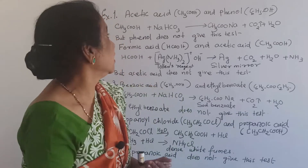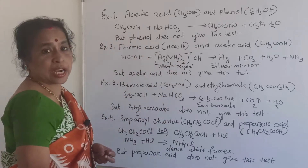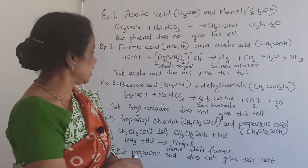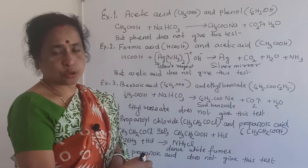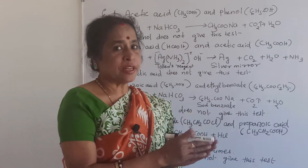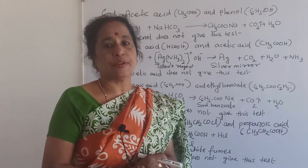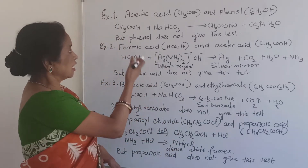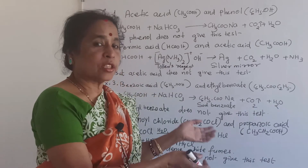Summary of examples: Acetic acid vs. phenol — use sodium hydrogen carbonate test. Formic acid vs. acetic acid — use Tollens' test. Benzoic acid vs. ethyl benzoate — benzoic acid reacts with NaHCO3. Propanoyl chloride vs. propanoic acid — propanoyl chloride on hydrolysis gives HCl which produces dense white fumes with ammonia. These are the important tests for distinguishing pairs of organic compounds.